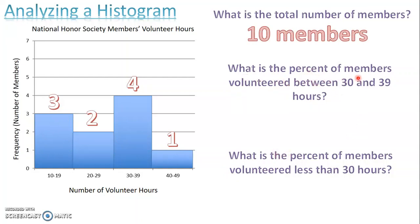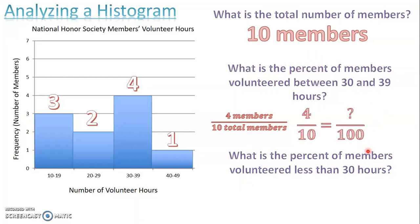What is the percent of members who volunteered between 30 and 39 hours? Between 30 and 39 hours there are four members out of a total of 10. Since percent means out of 100, we set up a proportion: 4 out of 10 equals how much out of 100. What times 10 gets to 100? Times 10. So 4 times 10 is 40 out of 100, or 40 percent. The percent of members volunteering between 30 and 39 hours is 40 percent.